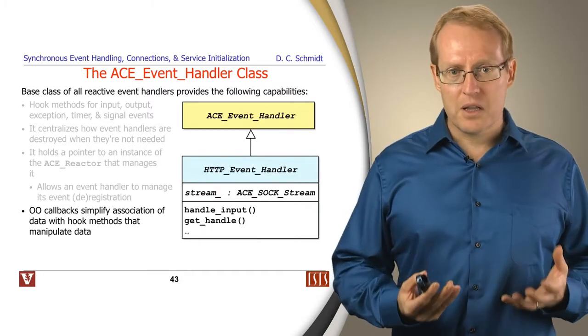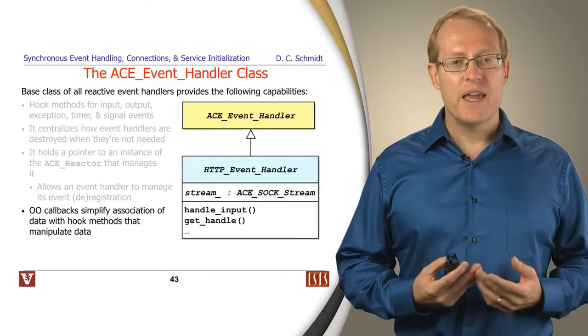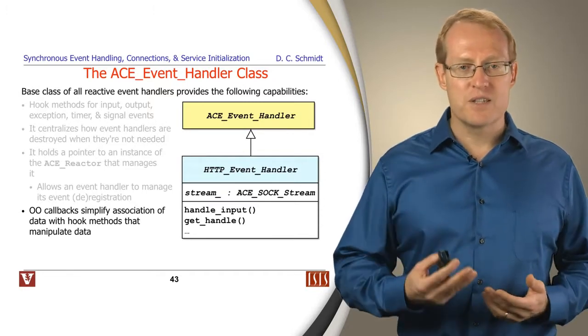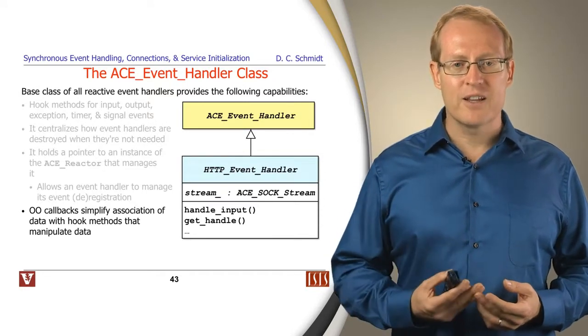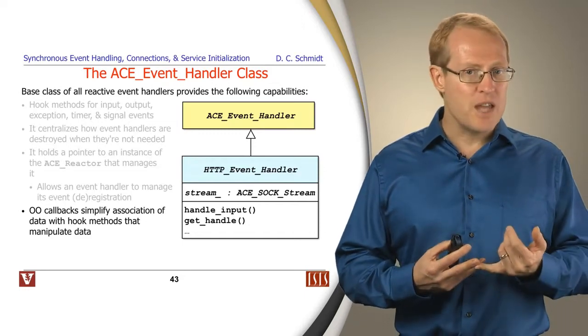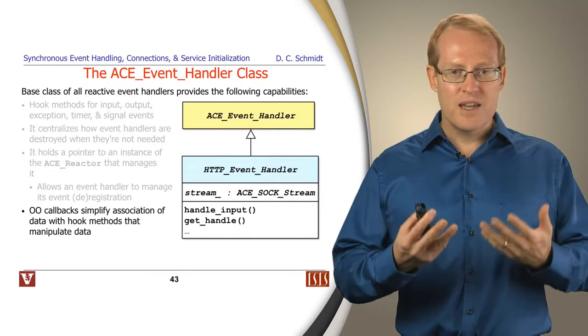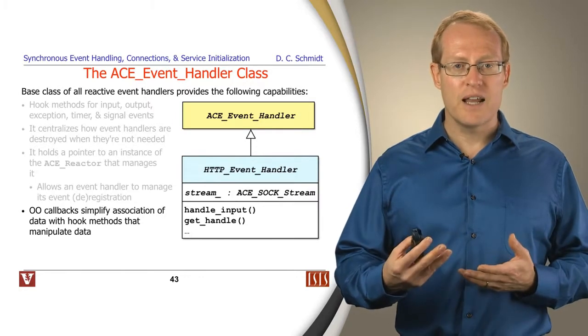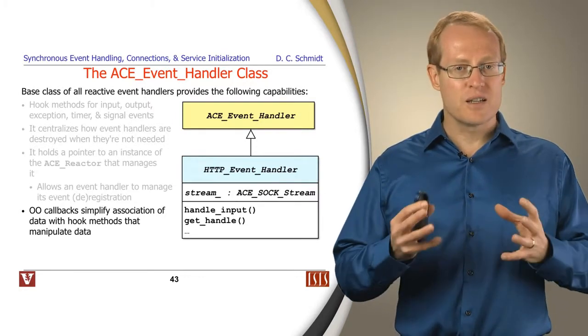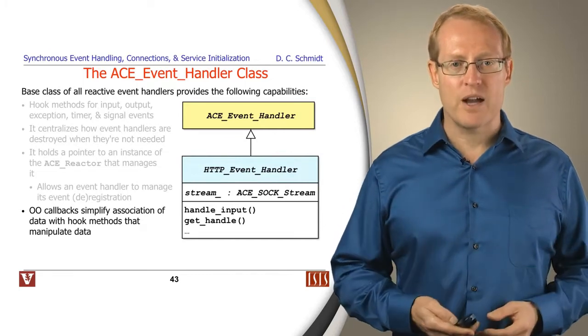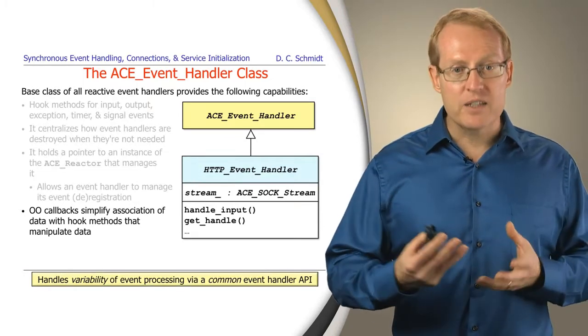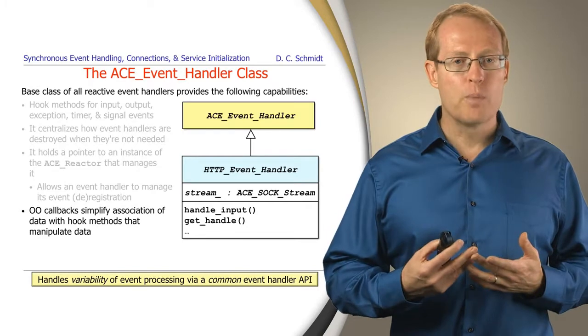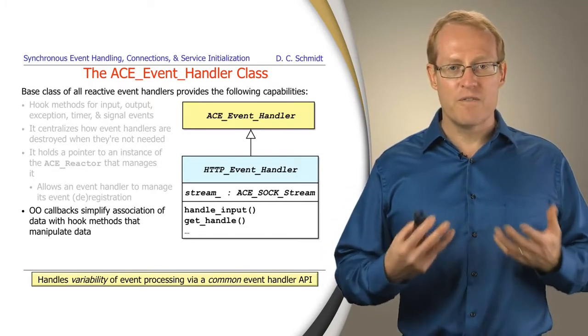Another nice thing you can do, because we use classes with virtual methods, is it's easy, as I mentioned before, to associate state with the hook methods. So here we have an example we'll talk about later, which is our HTTP event handler that inherits from ACE event handler, and it has some state, it has this connected socket that it's using to receive data from a client, and it overrides methods like handle input to figure out how to process the incoming data associated with that stream. And it's all nice and compact and encapsulated and part of the same abstraction. So if you look at this from a commonality and variability point of view, the ACE event handler allows us to have a common interface that is open to extensibility for the different kinds of events you might want to handle.